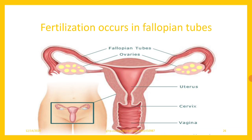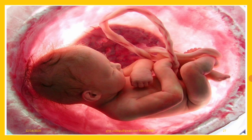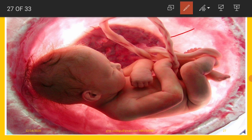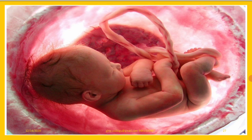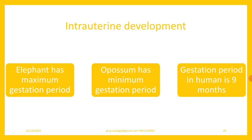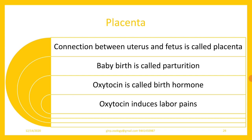Fertilization occurs in the fallopian tubes. There is a menstrual cycle in primates. The uterus is well-prepared before pregnancy to accommodate the developing baby. There is a connection between the uterus of the mother and the developing baby, called the placenta — its presence is a very important characteristic feature of mammals. The gestation period is the time required for intrauterine development. The elephant has the maximum gestation period, the opossum has the minimum, and gestation period in humans is nine months. Baby birth is called parturition, and oxytocin is the birth hormone that induces labour pains.